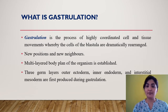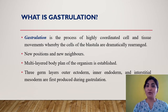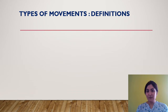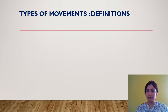This is why gastrulation plays a very important role in the next step of animal development, that is organogenesis. A single mistake in the movement of cells or tissue can have a large impact during organ formation. That is why gastrulation is such a critical process. Now let us have a look at the different types of movements involved in gastrulation one by one.